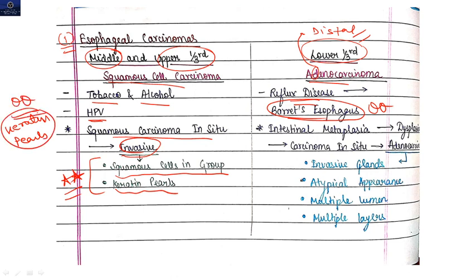In adenocarcinoma, intestinal metaplasia first occurs, then it will progress to dysplasia, then carcinoma in situ, and then it will progress to adenocarcinoma. Here you will get invasive glands, atypical appearance cells, multiple lumen, and multiple layers. These are the microscopic findings of adenocarcinoma.